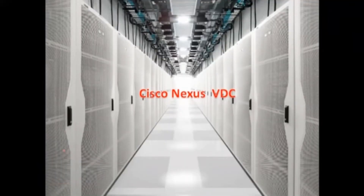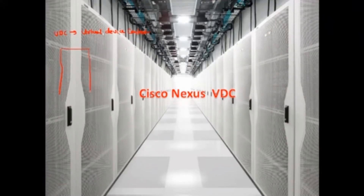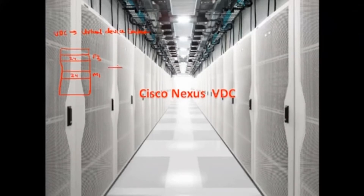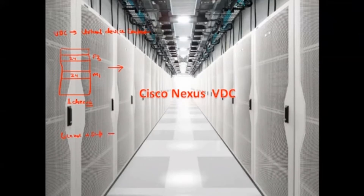Today we will talk about Nexus VDC. VDC stands for Virtual Device Context. It's like having a big chassis with line cards — F2, F3, or M1 line cards — each with 24 ports. This is one chassis, and you want to create a virtual switch out of it. VDC is just like a context in ASA.